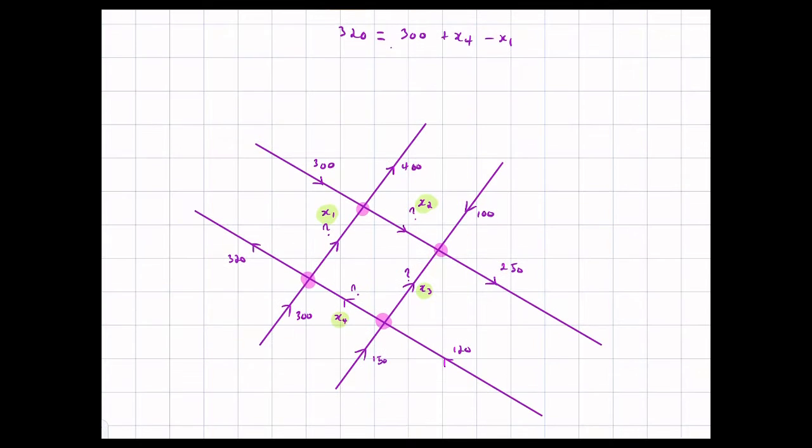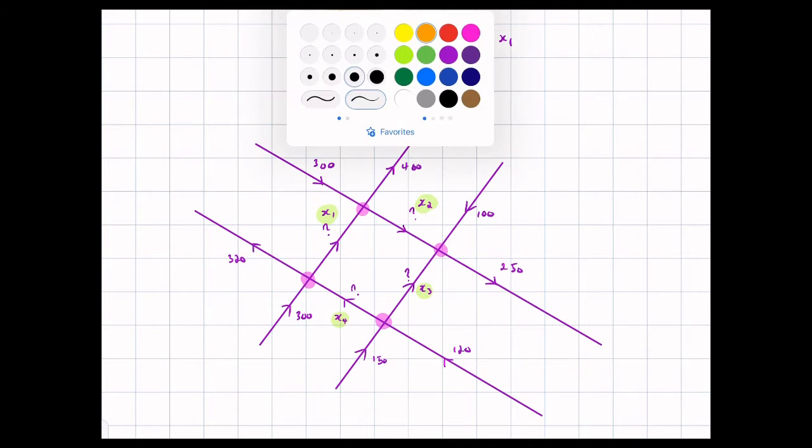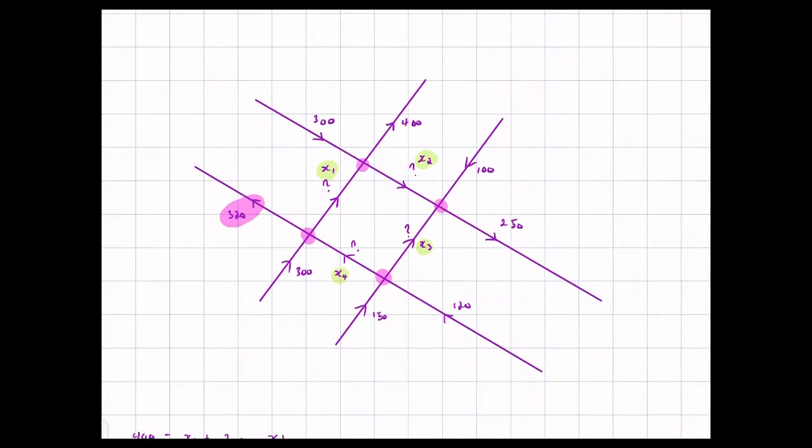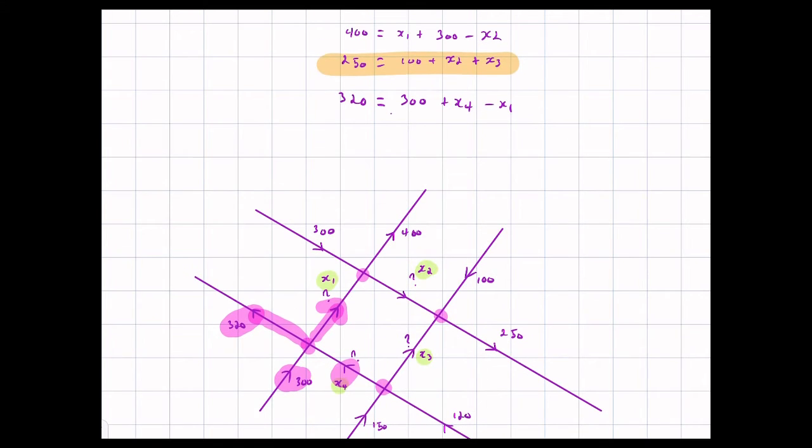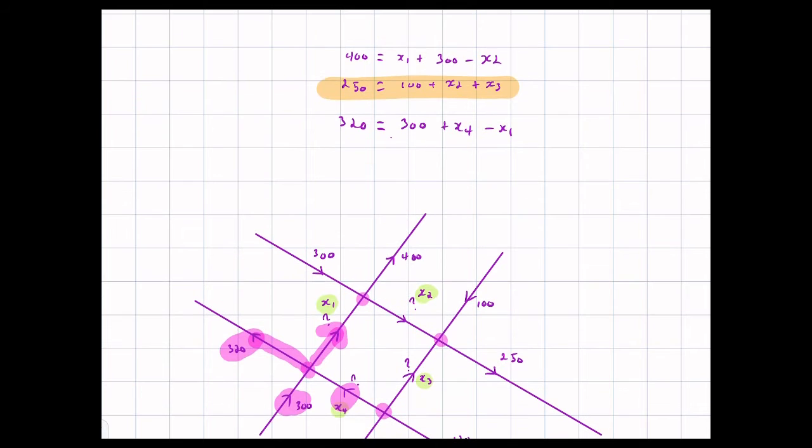What else do I get? Well, there are two more outflows. So there is this outflow, 320, coming out here from this intersection. 300 go in here, x4 cars come in from here. But out of this 300 and x4, x1 sort of go off in that direction. They don't come out. That means that the 320 is equal to that 300 plus the x4 minus the x1 cars that go out the other way. So I end up with this equation.